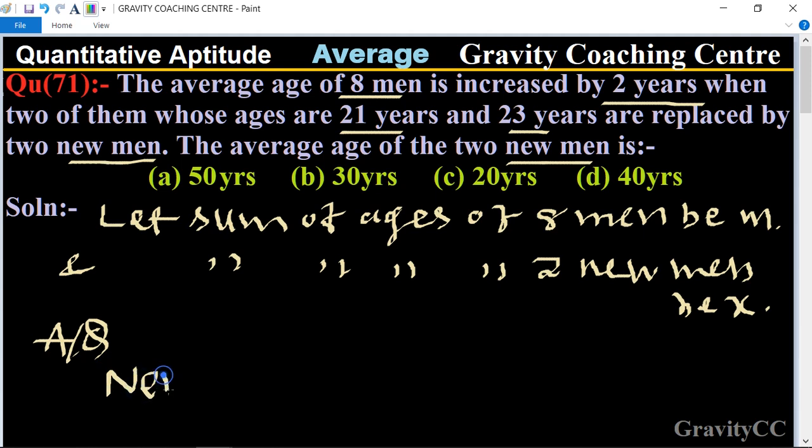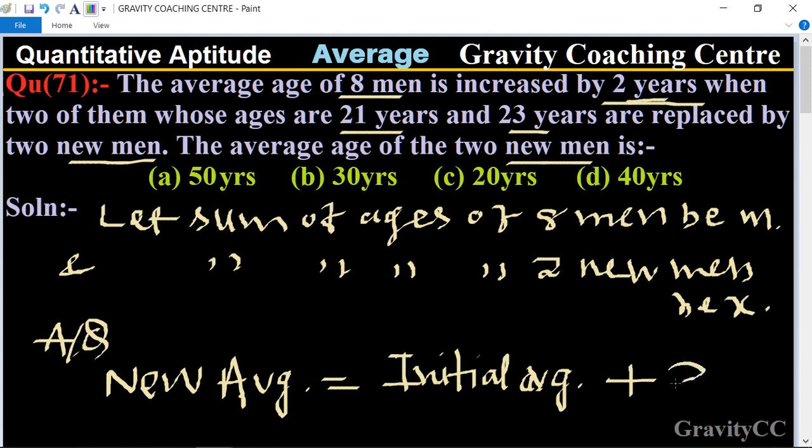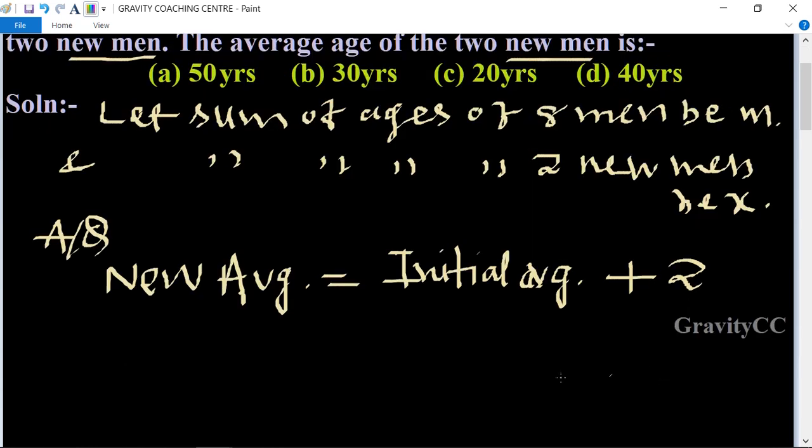According to the question, new average equal to initial average plus two. The new average is increased by two years. Now we find the initial average. The sum of age of eight men is given as m.